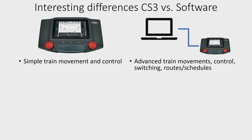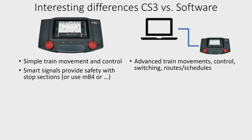If you look at how the Central Station 3 works for train automation, often the smart signals are used to provide safety. The smart signals can actually implement a stop section as well, such that they can power off a certain section of track so that when the locomotive comes, it will automatically stop there.